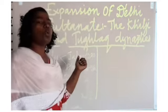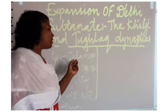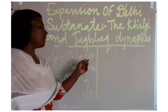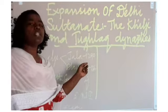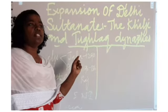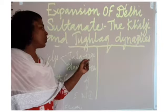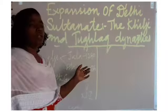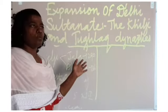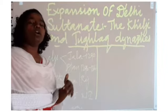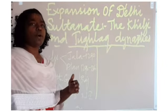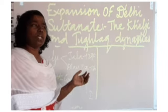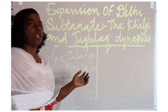The first ruler of Khalji dynasty was Jalaluddin Khalji. He became the ruler in 1290 and ruled until 1296. He conquered most parts of India. He was not an ambitious ruler.